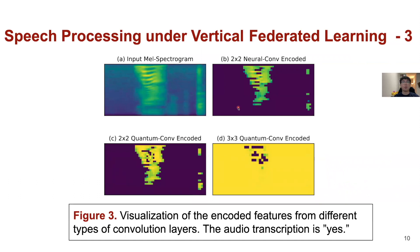If you compare with the trainable neural feature — figure 3B here — you can see the feature extraction is almost similar. After normalization, they do have a better intensity representation, but you also have some hyperparameters to tune. For example, two-by-two and three-by-three encoded kernels have slightly different results.